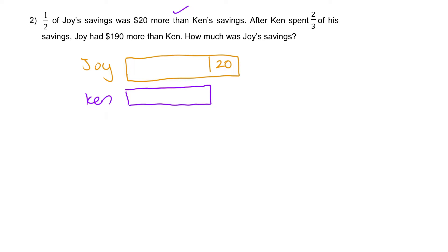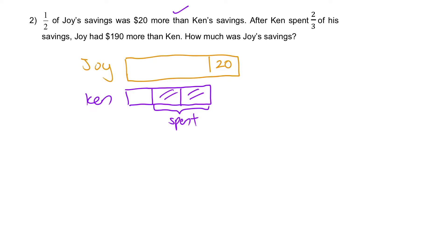Moving on: after Ken spent two-thirds of his savings. So this is Ken's saving — he's going to spend two-thirds, so we need to partition it into three units and he's going to spend two of them. After Ken spent two-thirds, Joy had $190 more than Ken. Remember, we are not done drawing Joy — this is only half — so we're going to extend it.